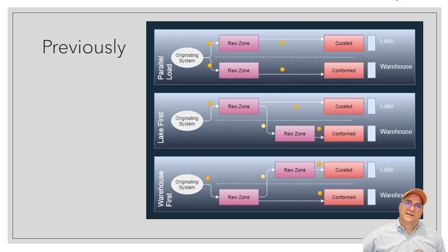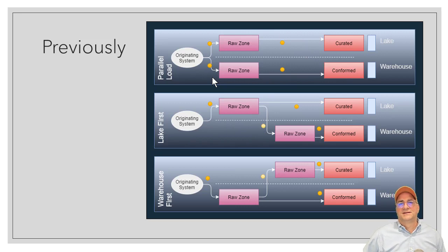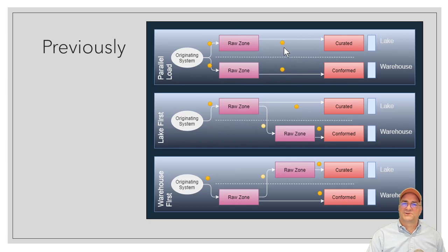The orange dots represent where we're doing transforms; the yellow dots represent where the transform is just a pure copy, so there's nothing to observe there. In the raw zone with the lake and warehouse parallel load, we actually have to do four transforms to get it built — two of those are probably similar, but the syncs are different, so we might get lucky and end up with three. In the warehouse it's done in SQL; in the lake it's done in Spark or something else.